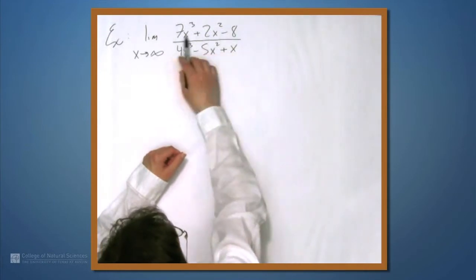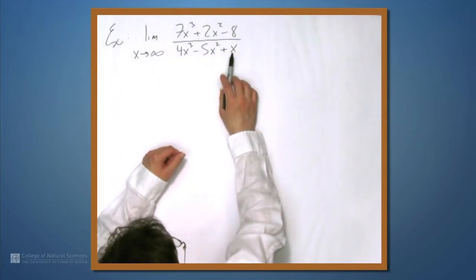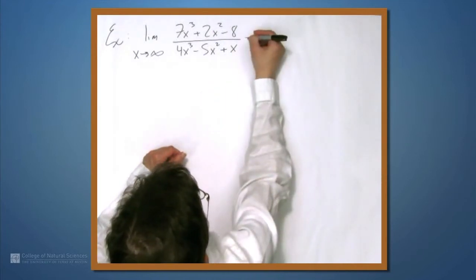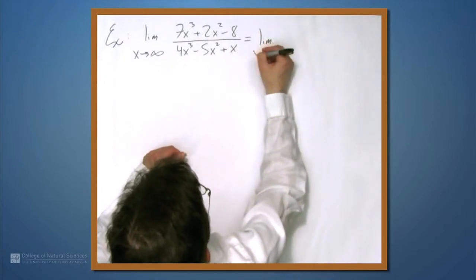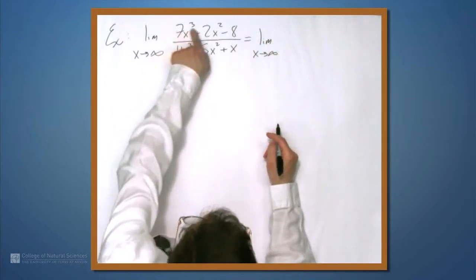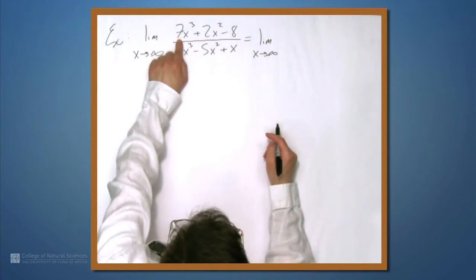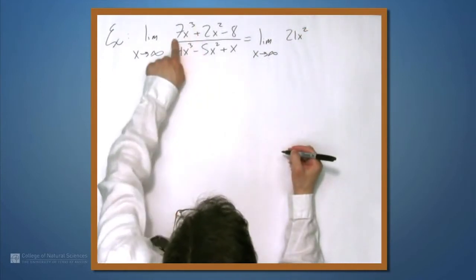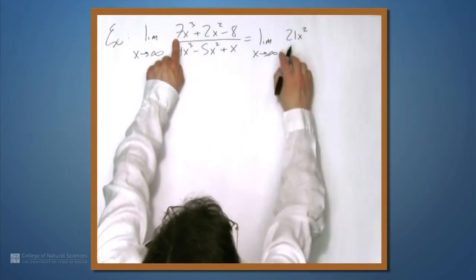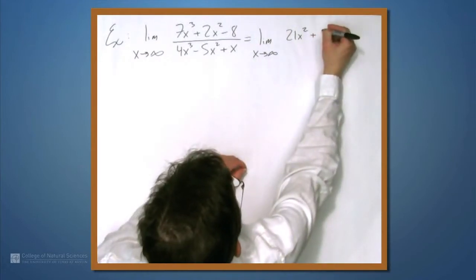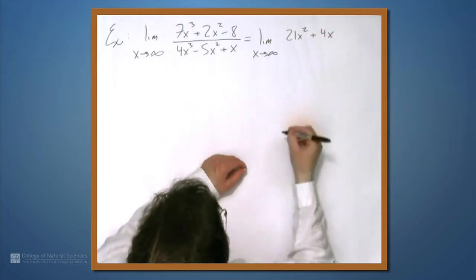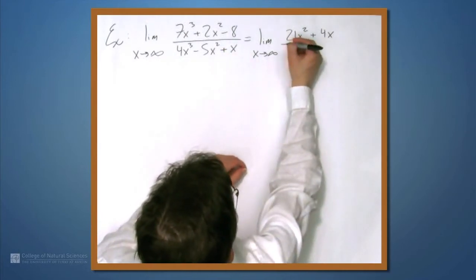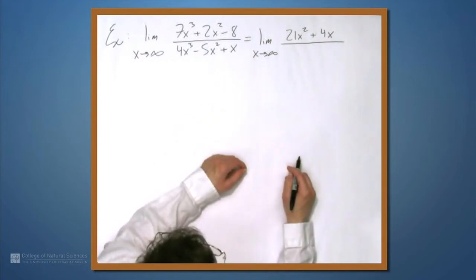So we have infinity on the top, limit of infinity on the top. Denominator also goes to infinity, so we can apply L'Hopital's rule. So let's take the derivative of the numerator first. So the limit as x approaches infinity. Derivative of this thing, 7x cubed gives us 21x squared. The 3 comes down and multiplies by the 7 to give us 21. Plus 4x to the first power, but I won't write that. And then minus 8, well the derivative of that is 0, so I won't write that at all. So that's our numerator.